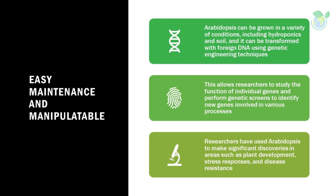Easy maintenance and manipulatable. Another advantage of Arabidopsis is that it is easy to grow and manipulate. Arabidopsis can be grown in a variety of conditions, including hydroponics and soil, and it can be transformed with foreign DNA using genetic engineering techniques. This allows researchers to study the function of individual genes and perform genetic screens to identify new genes involved in various processes. Additionally, Arabidopsis is easy to grow and reproduce, which makes it a convenient model for experimentation.